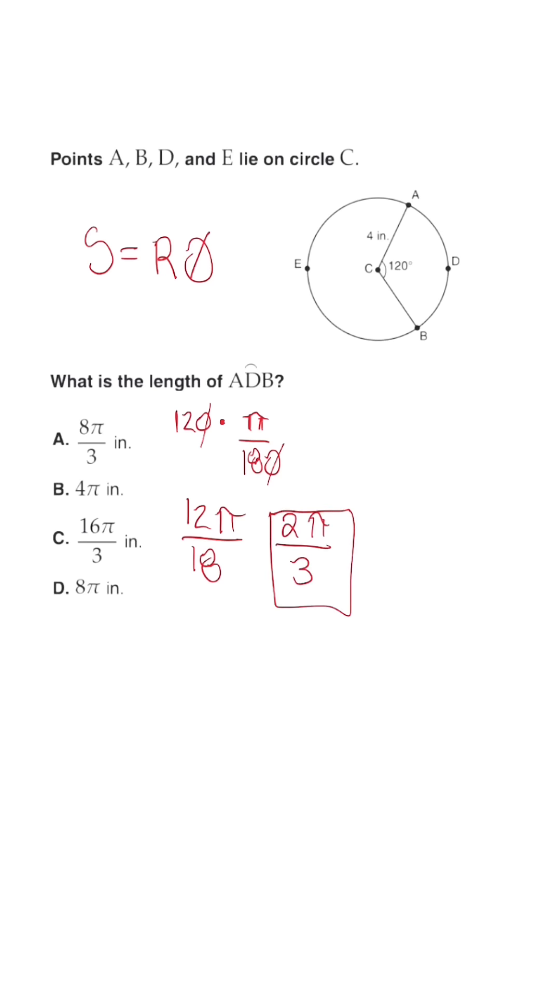Now that we've converted, we can plug this into the formula and determine what the arc length is. So arc length is equal to R, which is our 4 inches, times 2 pi over 3. And once we multiply, we're going to get 8 pi over 3.